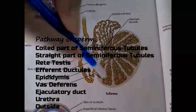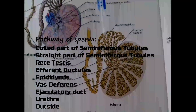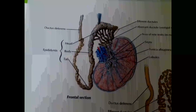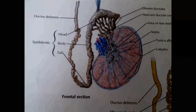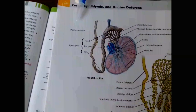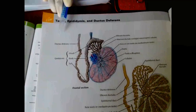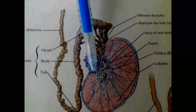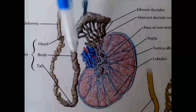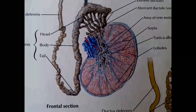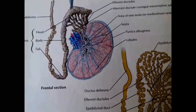The blood supply of the testis: the arterial supply is mainly from the testicular artery, which is a gonadal branch of the abdominal aorta. The testicular artery mainly supplies the testis and the other cells of the testis.